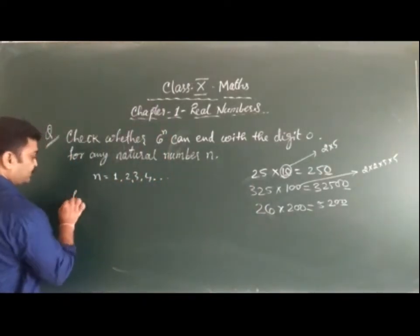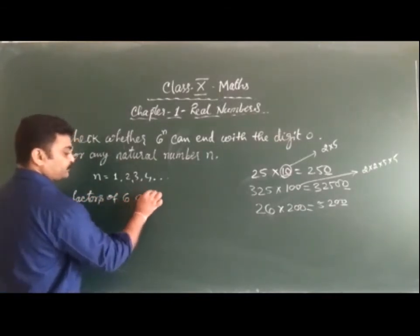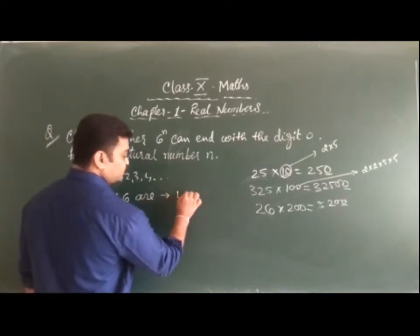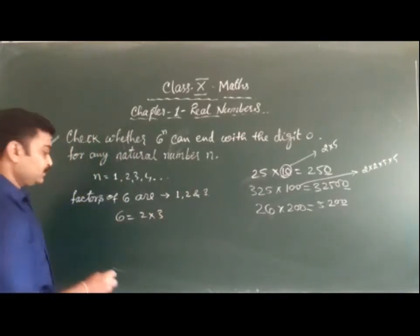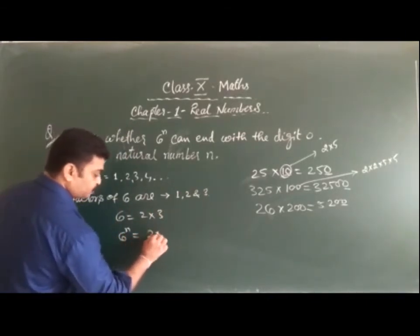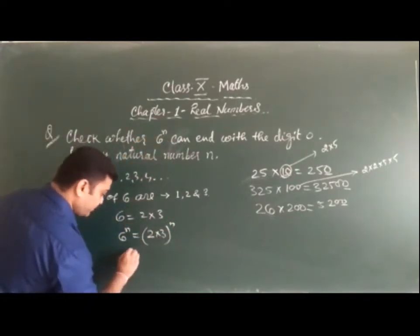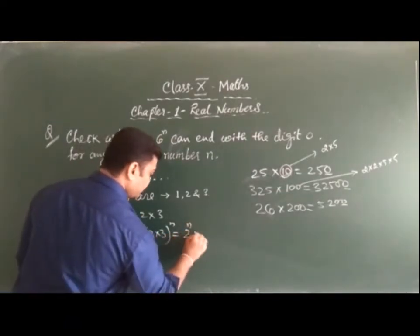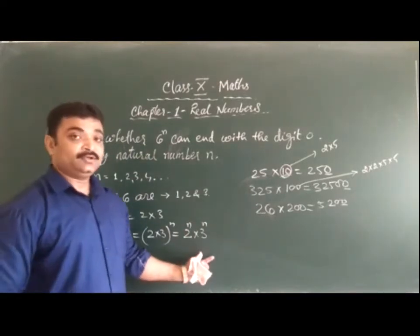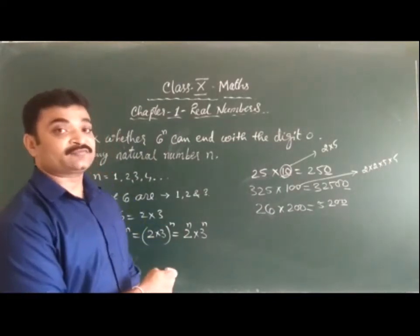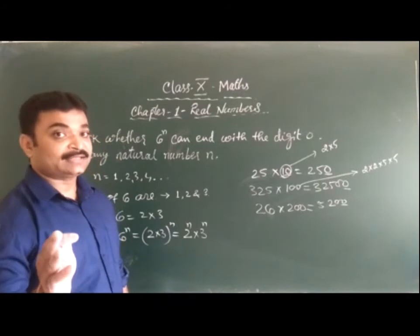The factors of 6 are 1, 2, and 3 — that is, 6 = 2 × 3. That means 6^n = 2^n × 3^n. But here we do not have 5 as a factor of 6. That means we will not get 0 at the end.